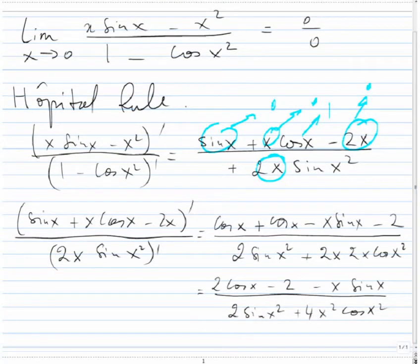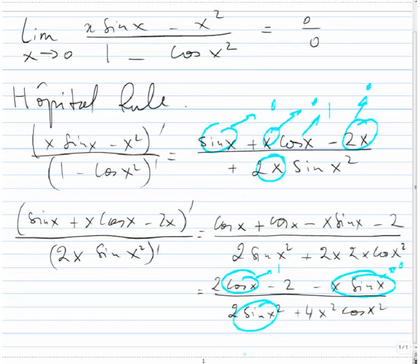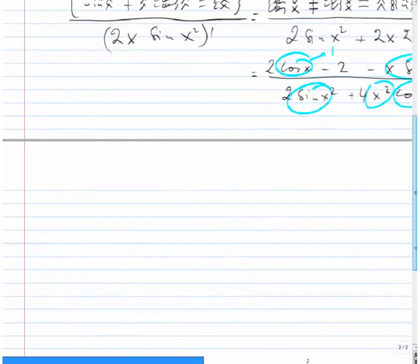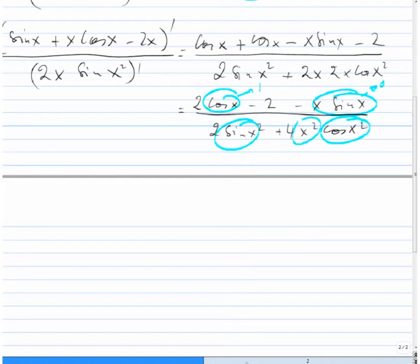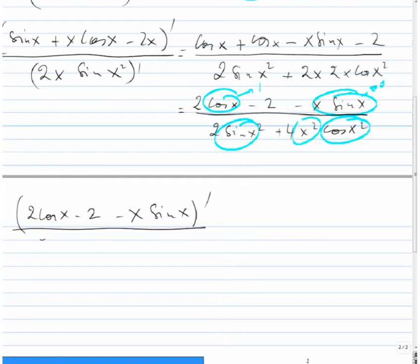Again, if we go to the limit, cos(x) goes to 1, so the numerator gives 2 minus 2, that's 0, and the x·sin(x) term also goes to 0. The denominator: 2·sin(x²) goes to 0, and 4x²·cos(x²) goes to 0 since x² goes to 0. So we have 0 over 0 again, and we need to use L'Hôpital's Rule for the third time. We need to find the derivative of the top and bottom — we must be extremely patient.